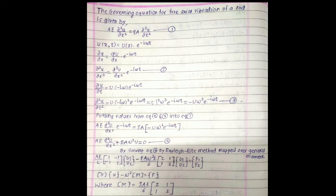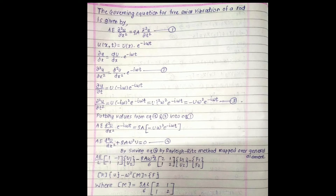Solving this equation using Rayleigh's method for a general element, I get: (AE/L) · [1, −1; −1, 1] · {u1, u2} − ρAω²L/6 · [2, 1; 1, 2] · {u1, u2} = {f1, f2}. In generalized form: stiffness matrix K = AE/L · [1, −1; −1, 1], minus ω² times mass matrix M = ρAL/6 · [2, 1; 1, 2], equals force F.